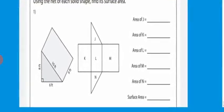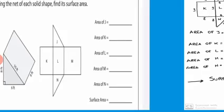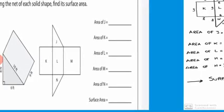Now we use the net of each solid shape to find its surface area. We have a triangular prism and its net. It is divided into two triangles, J and N, and three rectangles, K, L, and M.